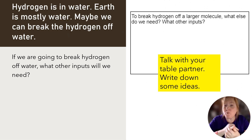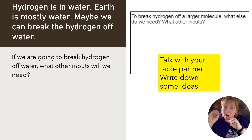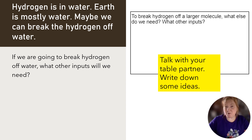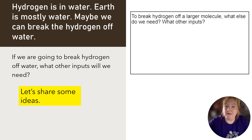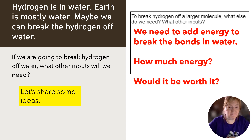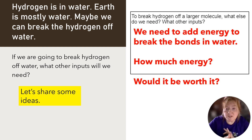Hydrogen is in water, and Earth is mostly water. Maybe we could break the hydrogen off of water. Write down some ideas — you can talk with your table partner. If we're going to break hydrogen off of water, what other inputs will we need? Well, we need to add energy to break the bonds in water. How much energy? Would it be worth it — how much energy are we putting in, and what are we getting out of it? Is the whole process going to be worth it?